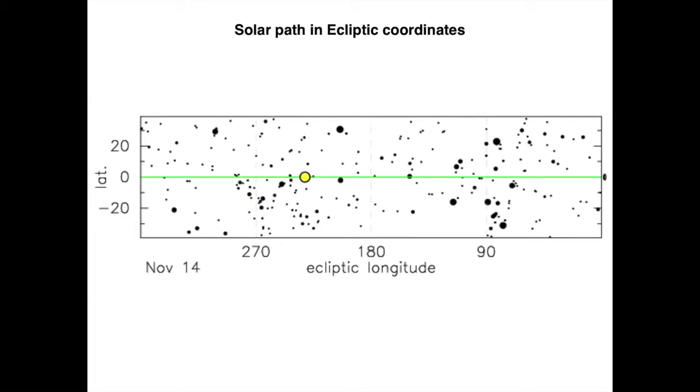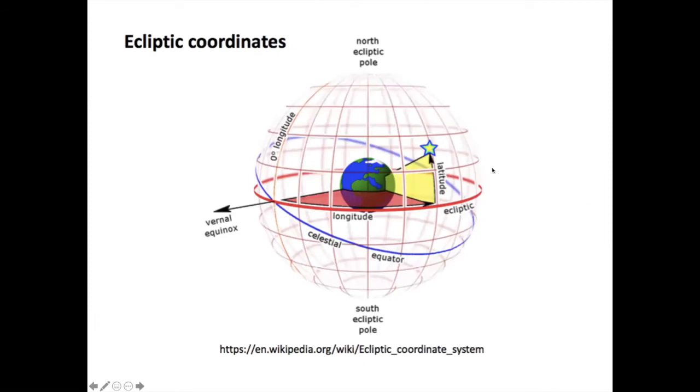So these are the definitions of the angles in the ecliptic. Both right ascension and ecliptic longitude start at the vernal equinox, and like right ascension, it increases to the east.